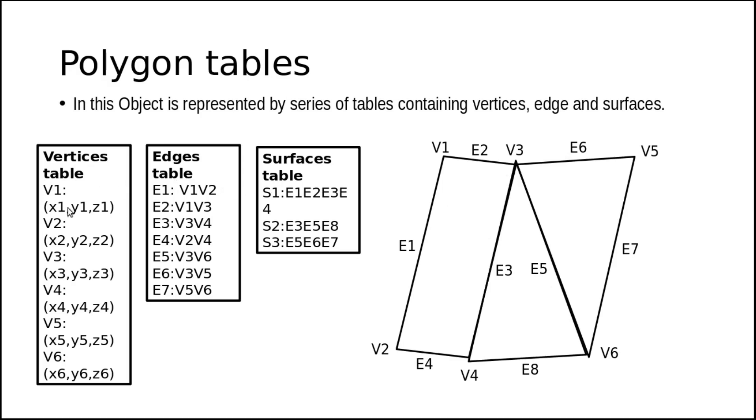Suppose V1 has the coordinates. V1 is represented as x1, y1, z1. V2 is x2, y2, z2. V3 is x3, y3, z3.